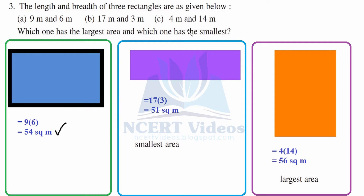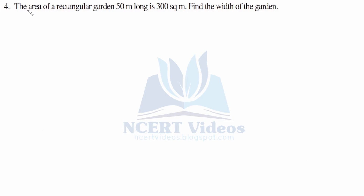Now 17 meter and 3 meter: length is 17, breadth is 3. When we multiply it, it is 51 square meter. Learn tables from 1 to 20 for faster calculation. Now 4 meter and 14 meter: 4 into 14 is 56 square meter. Comparing all three: 56 is the largest area, 51 is the smallest, and 54 is intermediate.